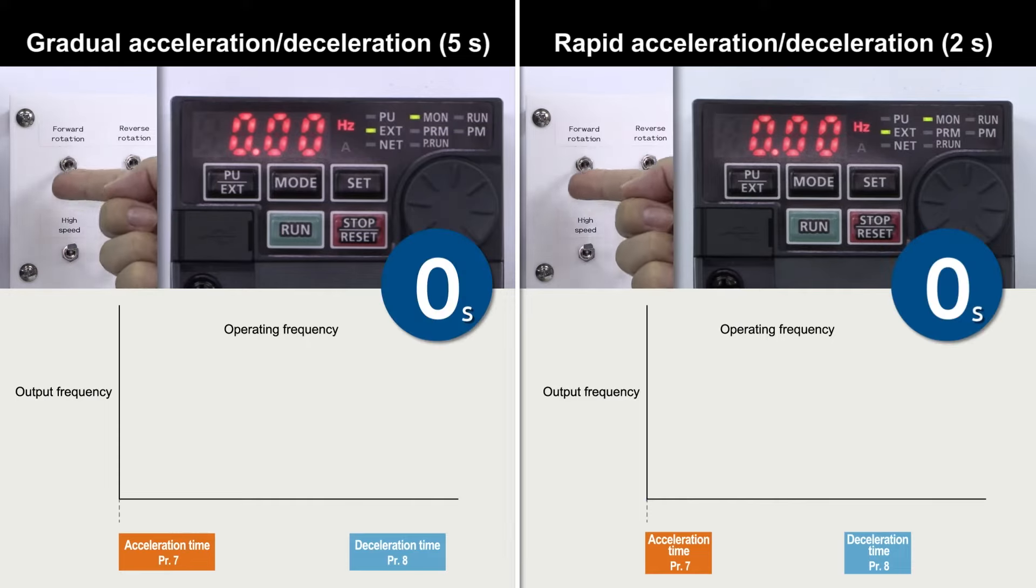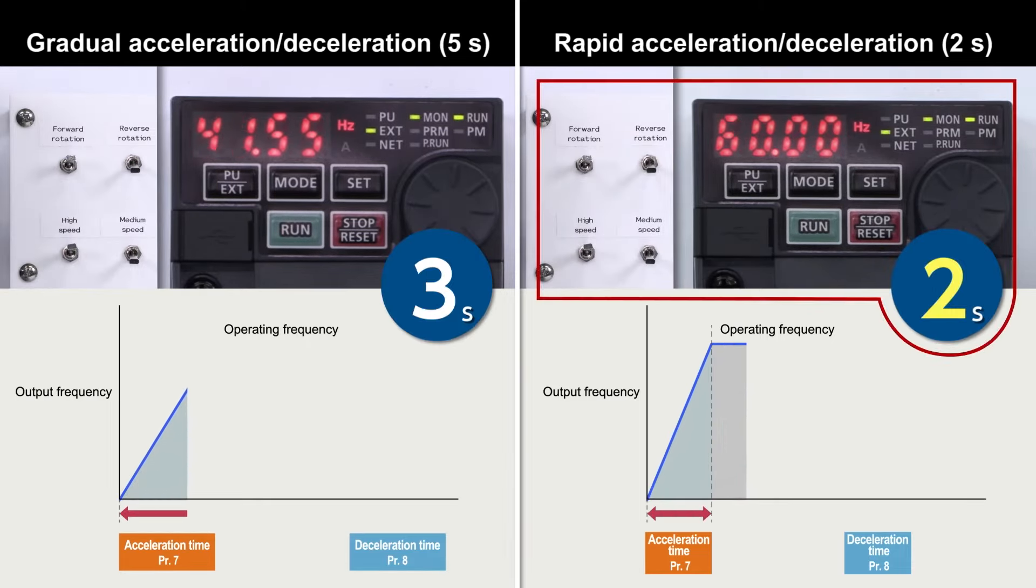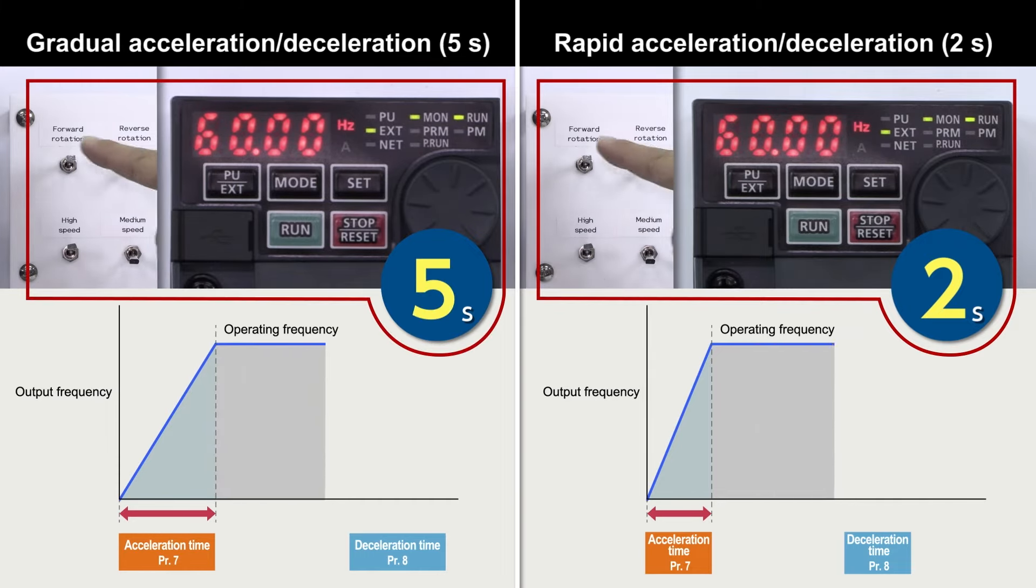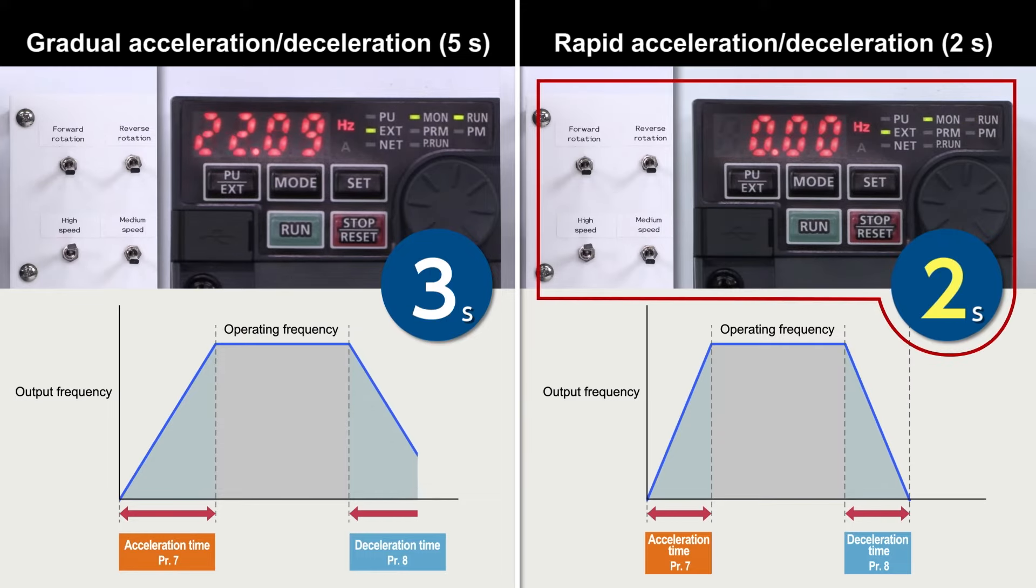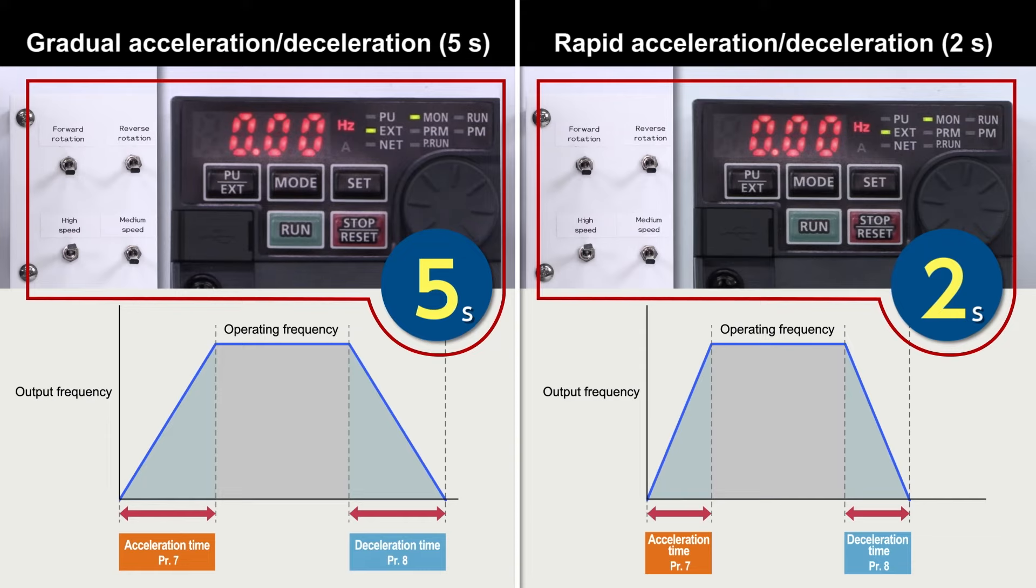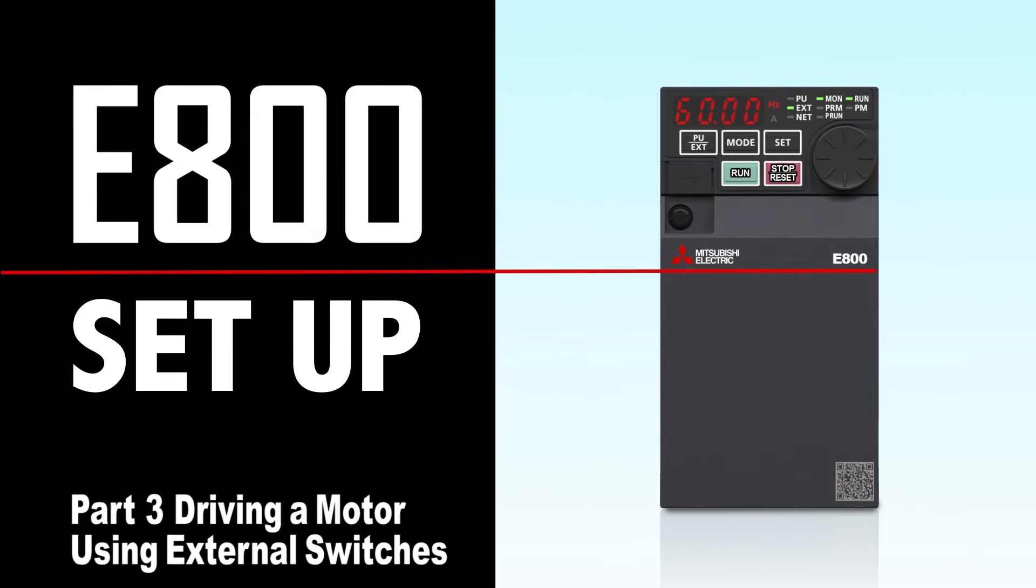This setting adjusts the acceleration and deceleration times by lengthening the time for gradual acceleration or deceleration, or shortening the time for rapid acceleration or deceleration. This completes the instructions for setting acceleration and deceleration times.